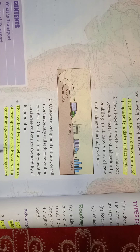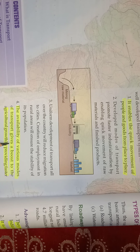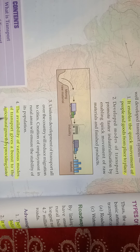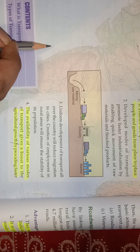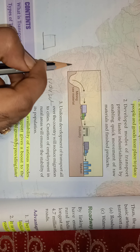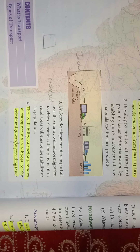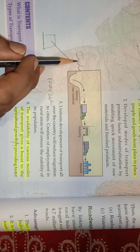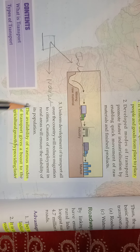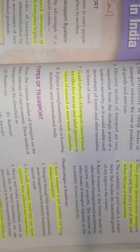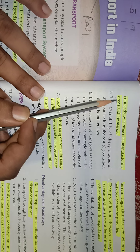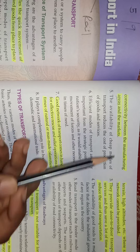Second, the availability of various modes of transport gives a boost to agricultural growth. Agricultural fields in India are far away from the markets and industries, so raw materials are delivered to industries and markets only because of transportation — by providing fast connectivity between the manufacturing area and the markets.